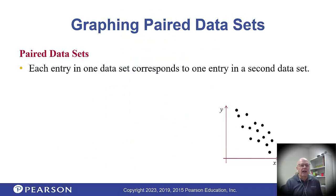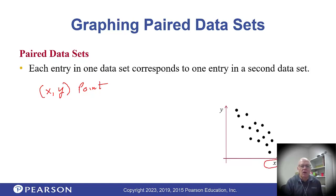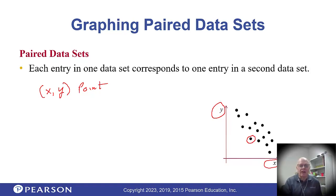Next, paired data sets — we'll return to this in chapter 9. We're talking about ordered pairs, which gives us a point with x values on the horizontal axis and y values going up vertically, and each data point has an x and a y coordinate.